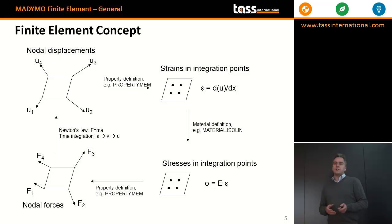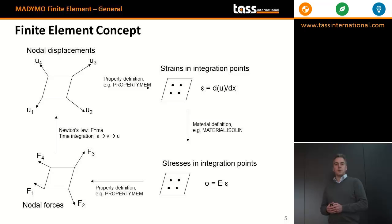The idea is that nodal displacements are transferred to element strains. This depends on the property of an element — a matrix translating the nodal displacements into a strain formulation and an element strain. Next, the material model determines how the strain is transferred into a stress. The stresses are calculated at the integration points, and again the property of the element is used to transfer them back into nodal forces.